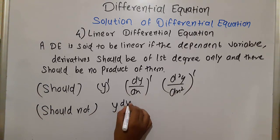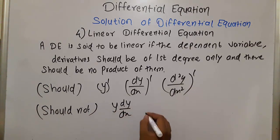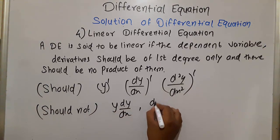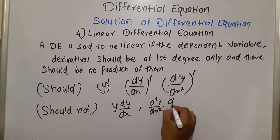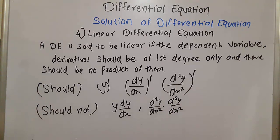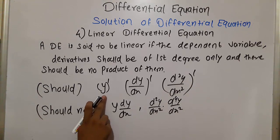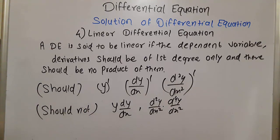It should not involve products such as y·(dy/dx) or (d²y/dx²)·(d⁴y/dx⁴). There should be no product of the dependent variable and its derivatives. When a differential equation has all terms of degree 1 with no such products, it is called a linear differential equation.